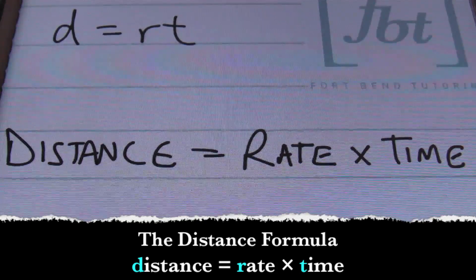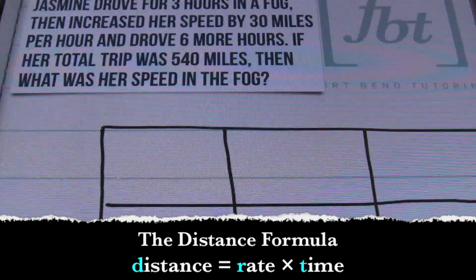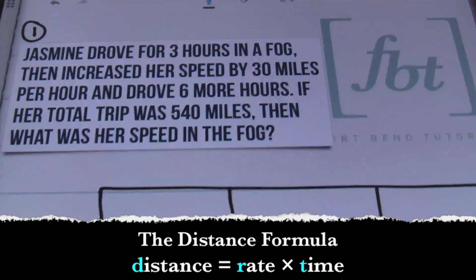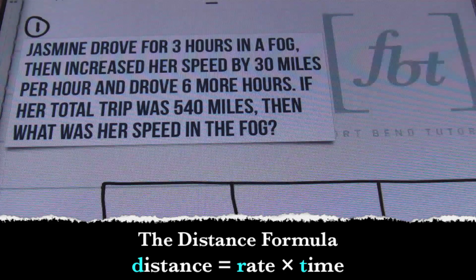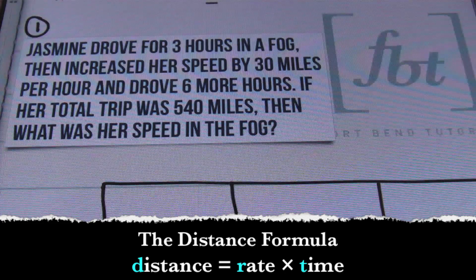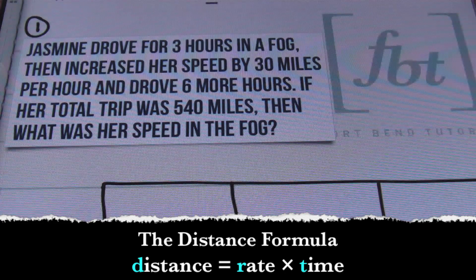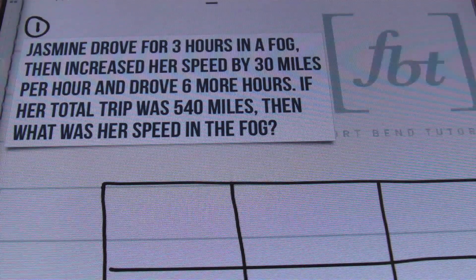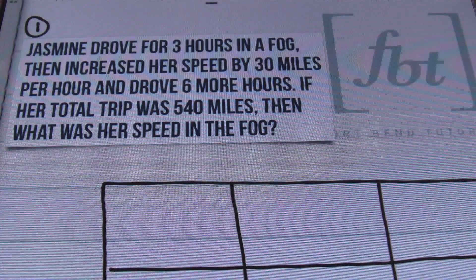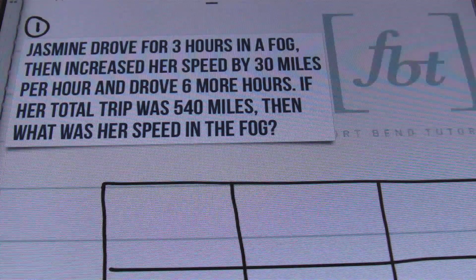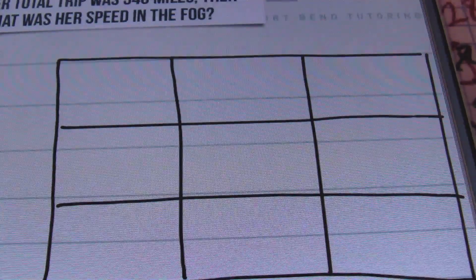Let's take a look at the first problem. Jasmine drove for three hours in a fog, then increased her speed by 30 miles per hour and drove six more hours. If her total trip was 540 miles, what was her speed in the fog? What I like to use is a table — a three by three most of the time.